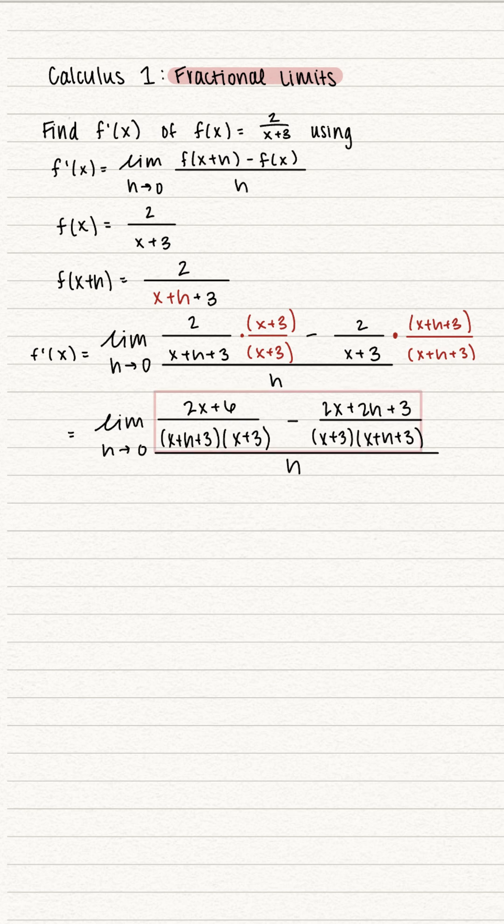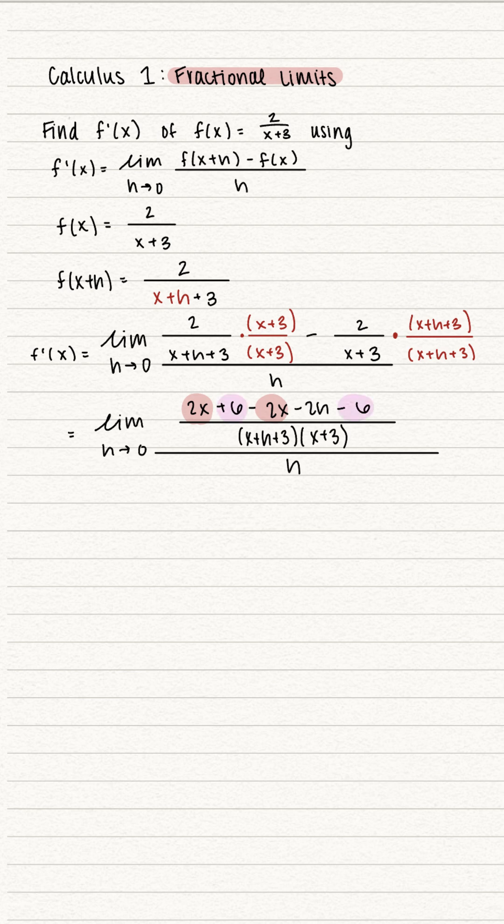Now that the fractions in the numerator have the same denominator, we can combine those, but don't forget we need to distribute that minus sign. This helps us out because now we have some terms that cancel out. So what we're left with is negative 2h in the numerator.